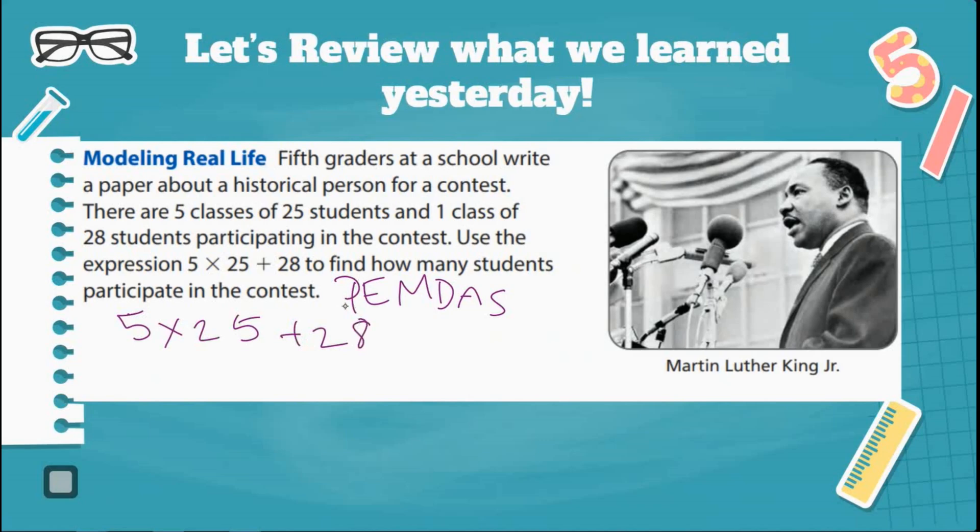If I have 5 times 25 plus 28, do I have any parentheses? I do not. Are there exponents? I do not have any exponents. Is there any multiplication? Yes. So 5 times 25, I'm going to set that up in standard algorithm. 5 times 5, well that's 25. 5 times 2, well that's 10. 10 plus 2 is 12. So that would be 125.